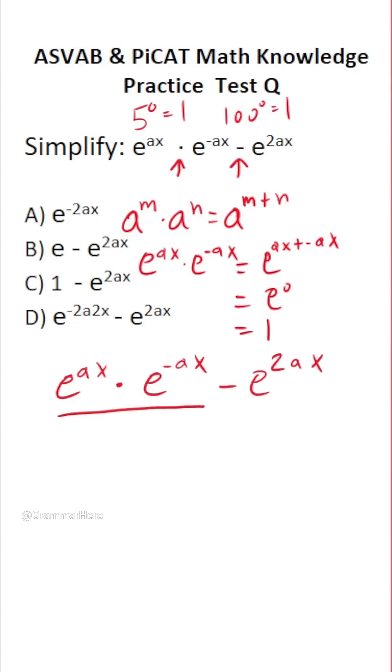So we can replace e to the ax times e to the negative ax with simply one minus e to the 2ax. We can't simplify this expression any further. So that is our answer. We can see it's C, one minus e to the 2ax.